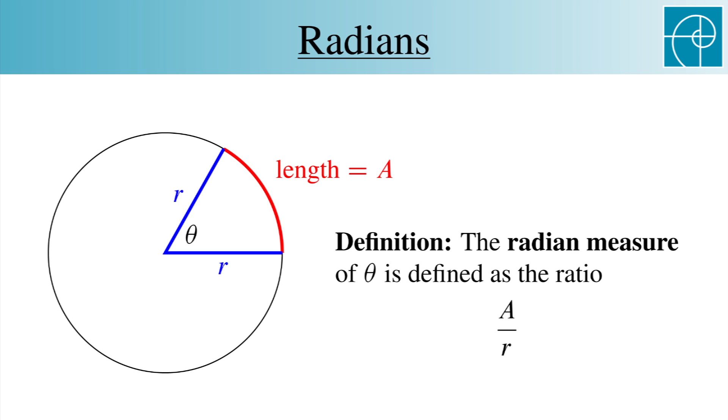It's worth noting that if the circle has radius 1, then the measure of the angle in radians is just the length of the arc A. This means that it's often convenient to let r be 1.